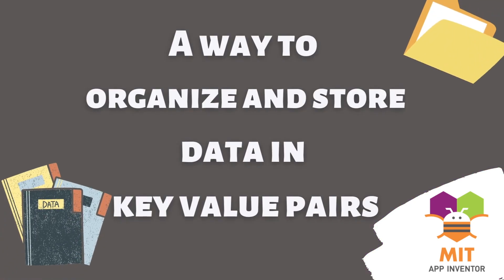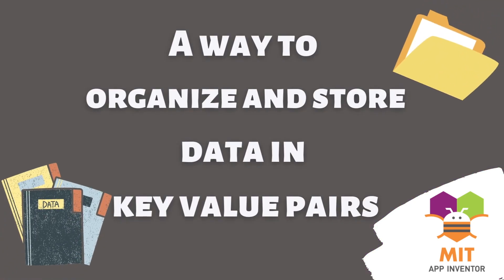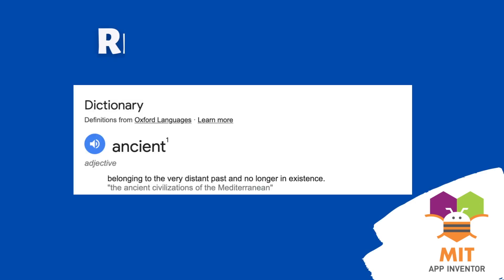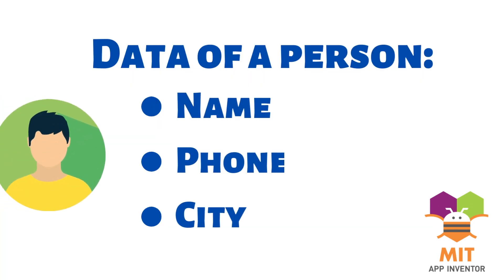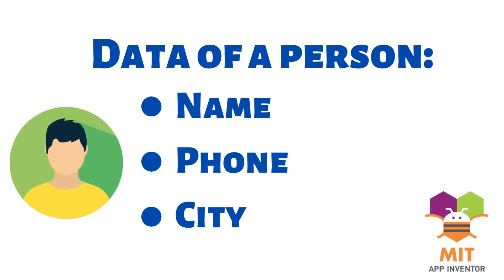In MIT App Inventor, a dictionary block is a way to store and organize data in pairs called key-value pairs. It is similar to a real-life dictionary where you look up a word — the key — to find its meaning — the value. For example, let's say we want to store information about a person such as the name, phone number, and city.